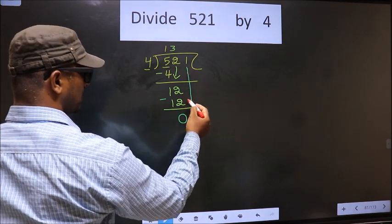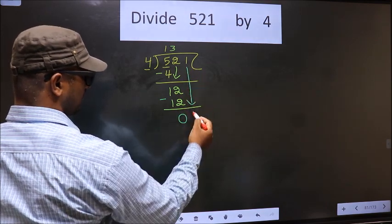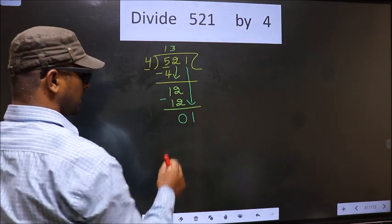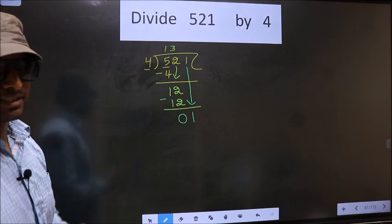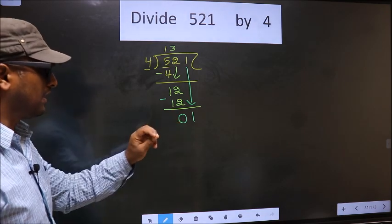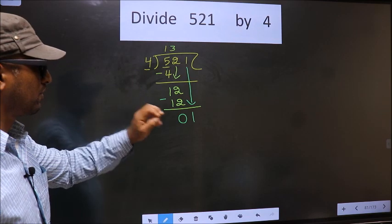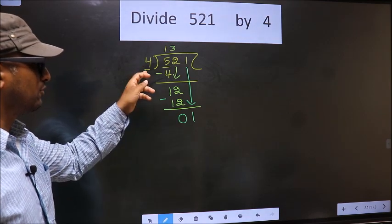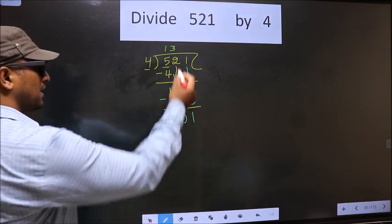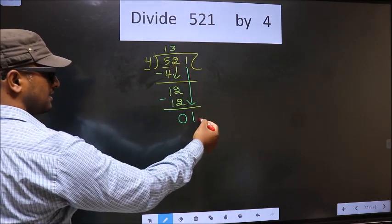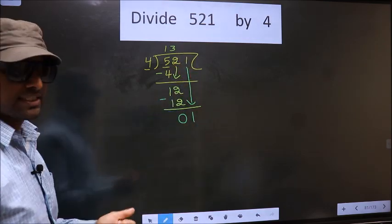Now you bring down the next number, so 1 down. This is where the mistake happens, and the mistake is this: here we have 1, and here 4. One is smaller than 4, so what many do is put a decimal and take 0 here, which is wrong.